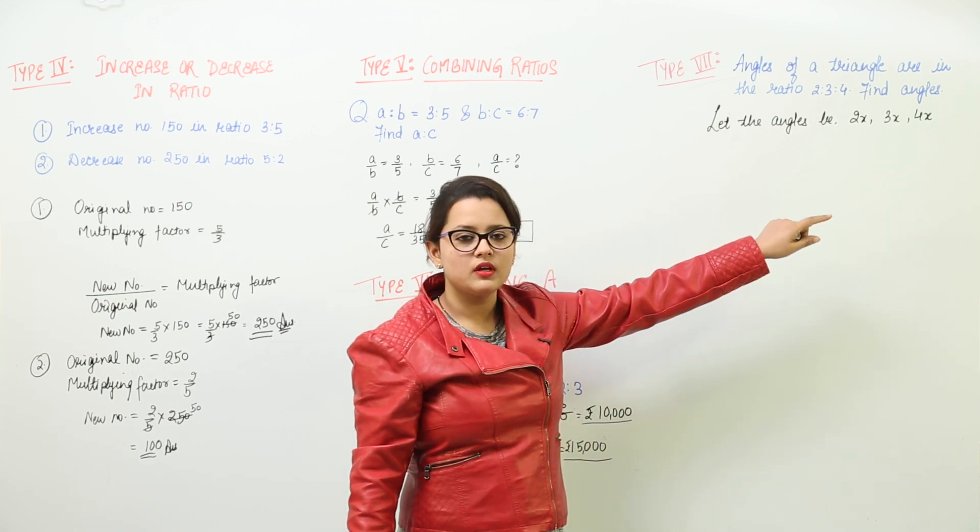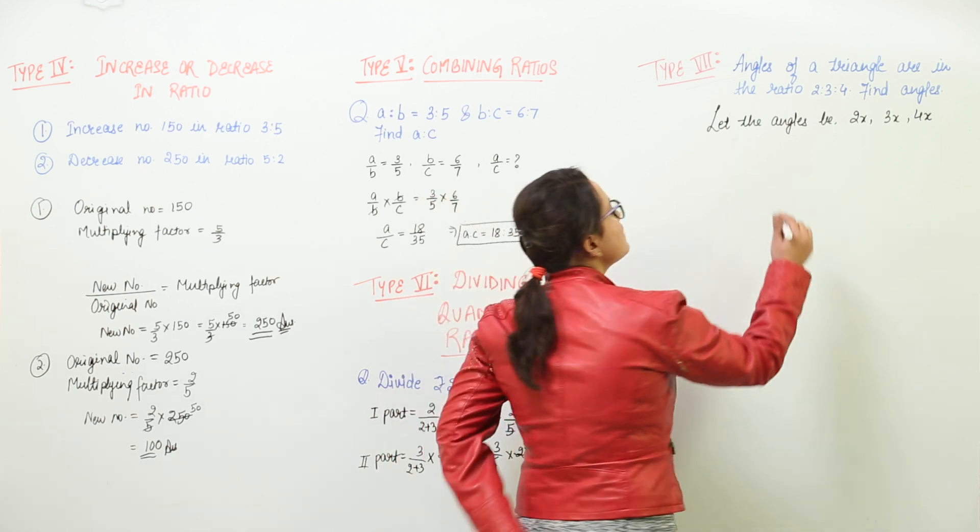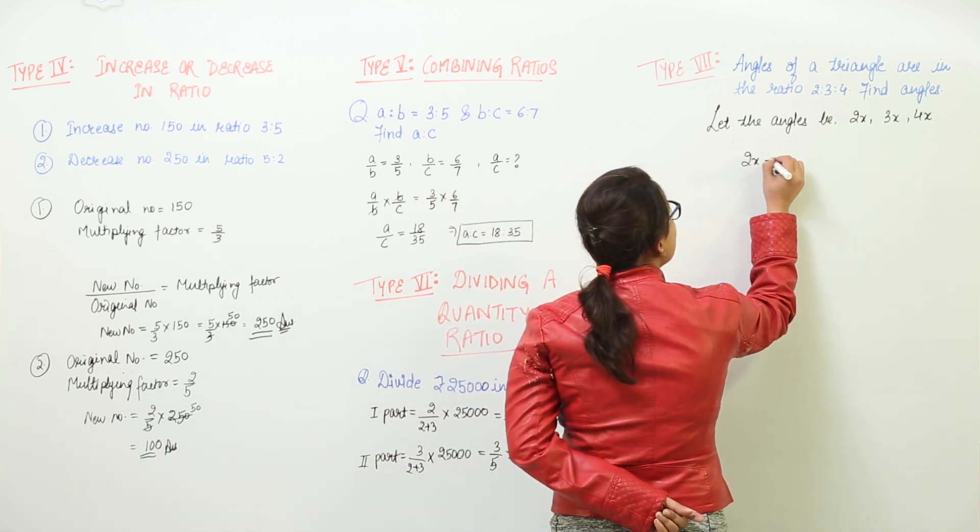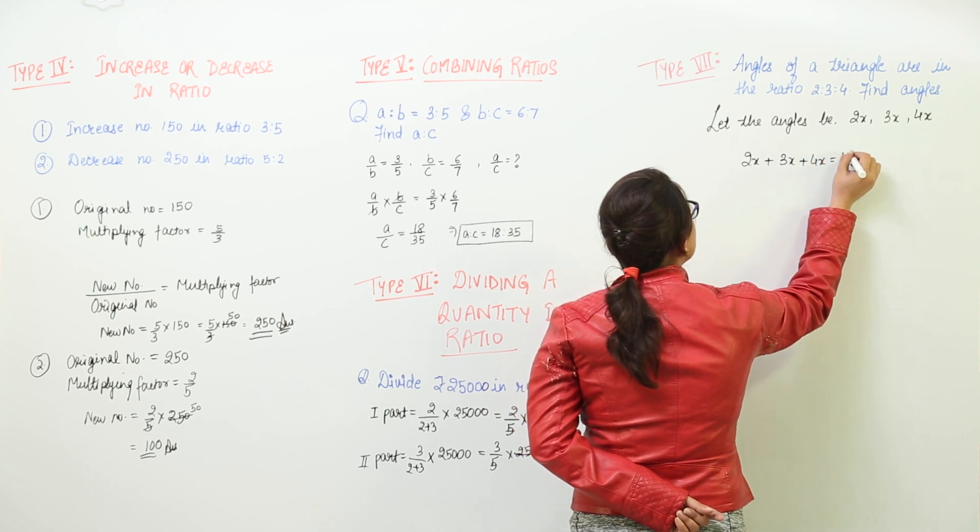Now the quantities we have written, all we have to do is apply the angle sum property because the sum of all the 3 angles of a triangle is equal to 180. So we write that down.